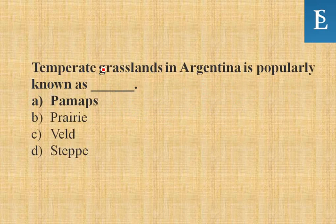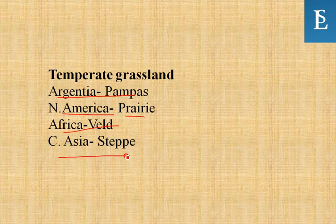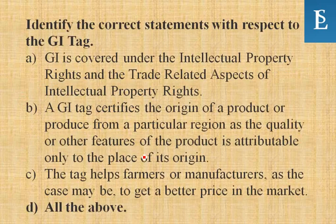Temperate grasslands in Argentina are popularly known as Pampas. Also remember: temperate grasslands in North America are called Prairie, in Africa they're called Veld, and in Central Asia they are called Steppe.